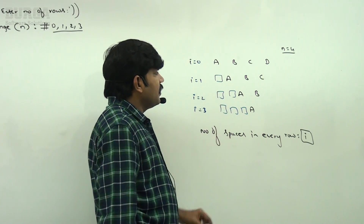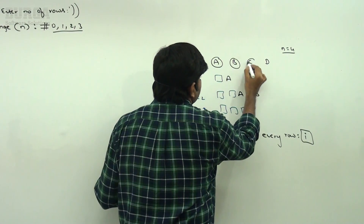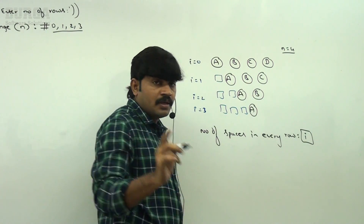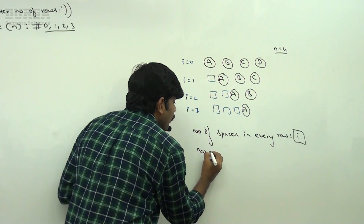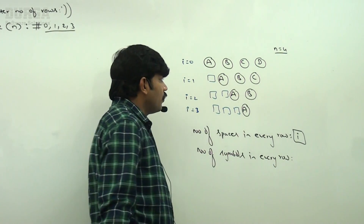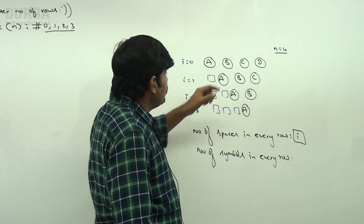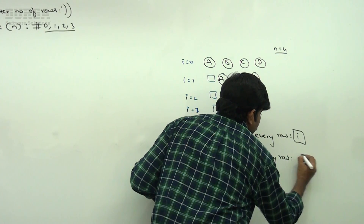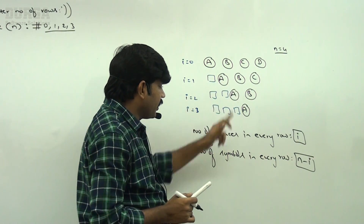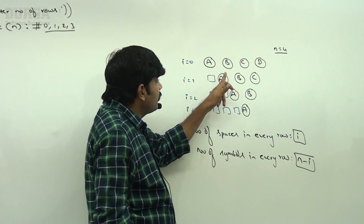After the spaces, symbols are printed. How many symbols? First row has 4 symbols, second row has 3, third row has 2, fourth row has 1. The number of symbols in every row is n minus i: 4 minus 0 equals 4, 4 minus 1 equals 3, 4 minus 2 equals 2. So n minus i symbols per row.